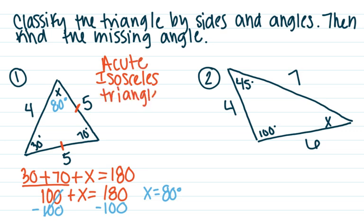That means I have an acute isosceles triangle. That is what number one is — an acute isosceles triangle. You put the angle first, then the side, and then triangle for the shape.